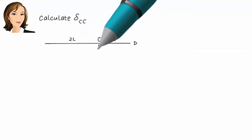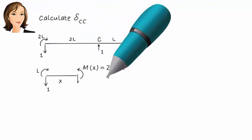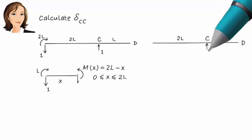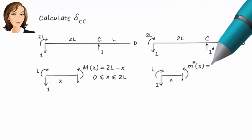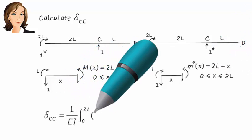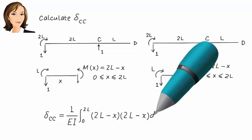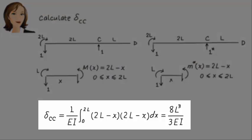Delta CC, vertical displacement at C due to a unit load placed at C, can be calculated in the same manner. Here is the moment equation and here is the displacement.